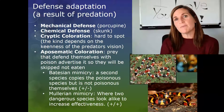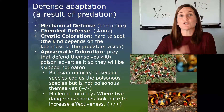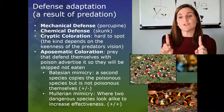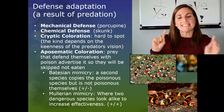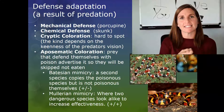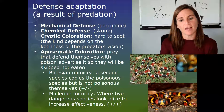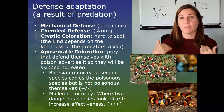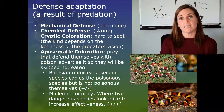Another type of mimicry is Müllerian mimicry, where two dangerous species look alike. This creates a synergistic increase in effectiveness because no one wants to be around either of them. It is good for the fitness of both species.